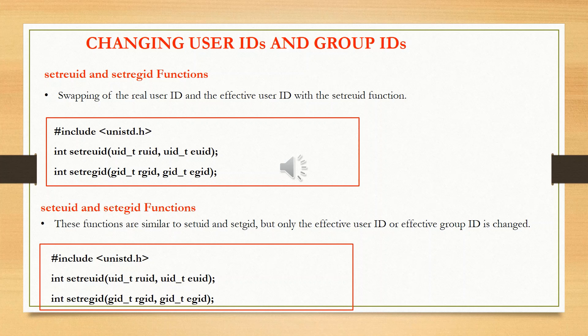The seteuid and setegid functions are different from setuid and setgid — with these functions, only the effective user ID or effective group ID is changed. These two functions return integer values and take parameters euid and egid respectively, where 'e' denotes effective user ID and effective group ID.